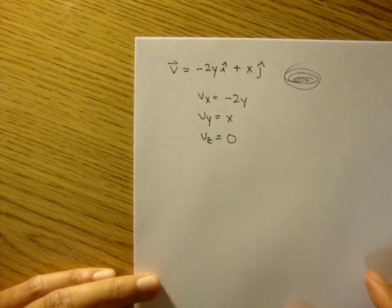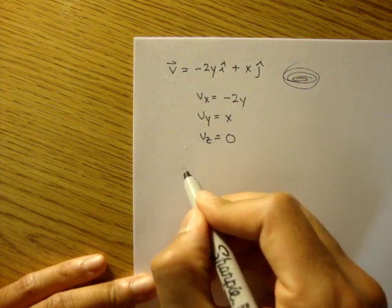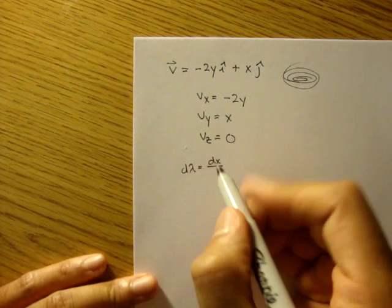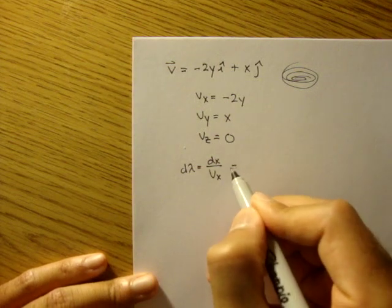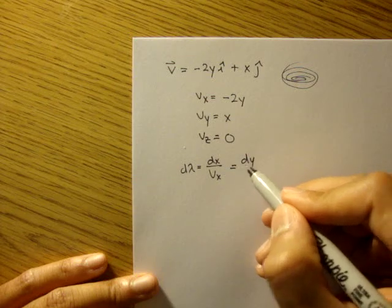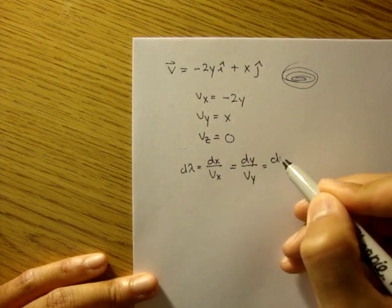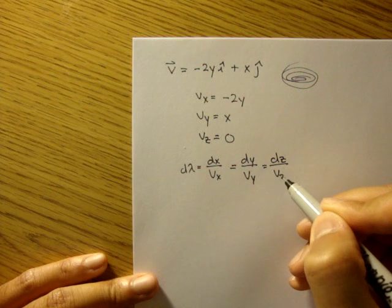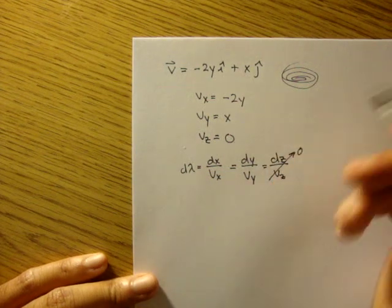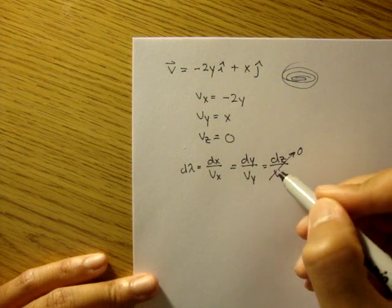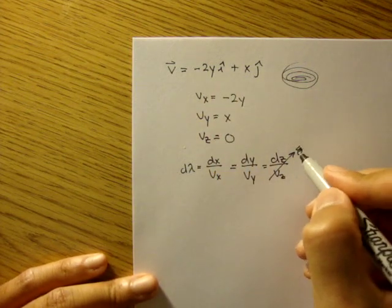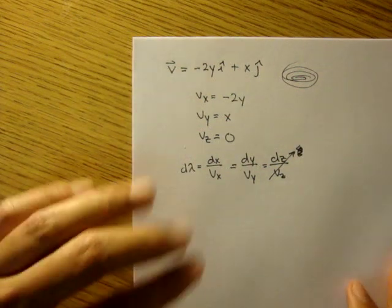So let's set up our streamline equations. D lambda, this is the formula, dx over vx, and that's equal to dy over vy, and that's equal to dz over vz. See here, it's just not there because it's a two-dimensional flow. It's not really 0, it's just we don't have this term in our equation.